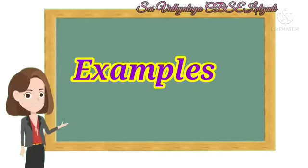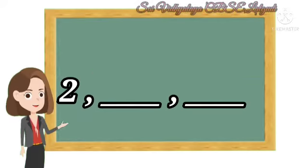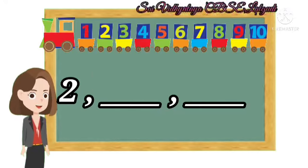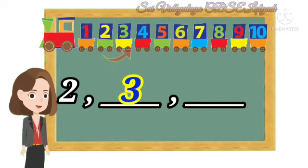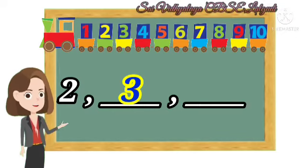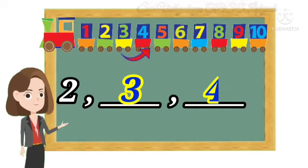Let's see some examples. Here we have to find after numbers. Now tell me what comes after 2? 3. Yes, so write 3 in the first space. Now what comes after 3? 4. Yes, so write 4.